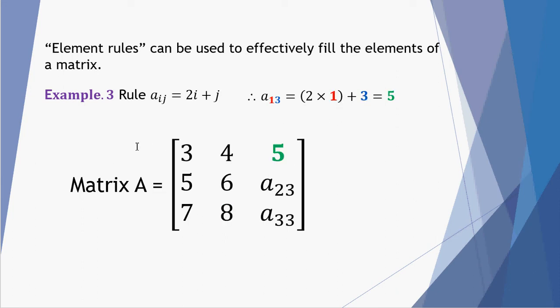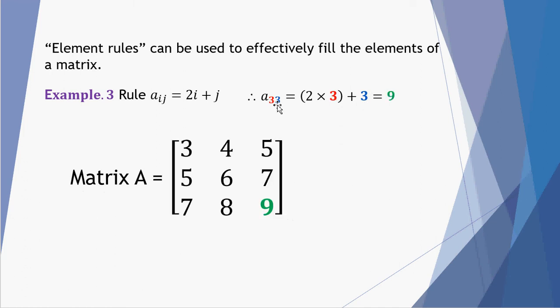Our final column: row 1 column 3 — 2 times the row number: 2 times 1 is 2 plus 3 gives 5. Element A 2 3: 2 lots of row number 2 gives 4, plus column number 3 gives 7. And finally element A 3 3: 2 times 3 is 6, plus J the column number 3 is 9. And that is how we complete that particular matrix.